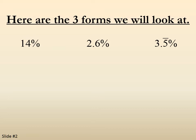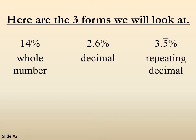So three different forms. We've got a whole number, a decimal, and a repeating decimal. These are the three different forms that we'll look at.